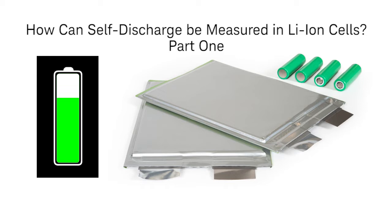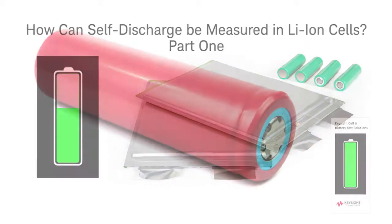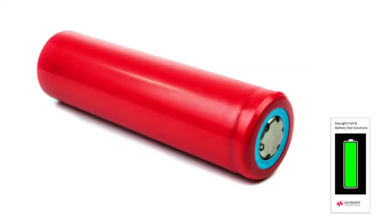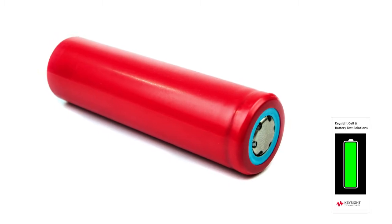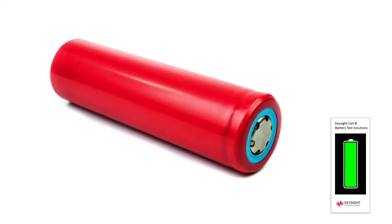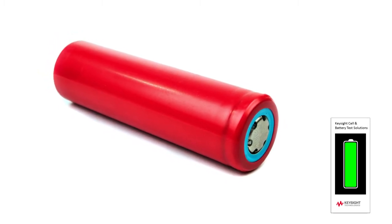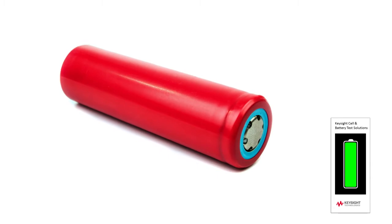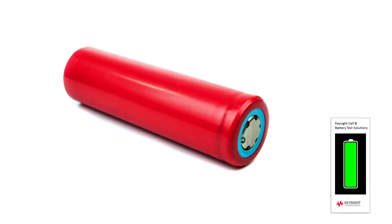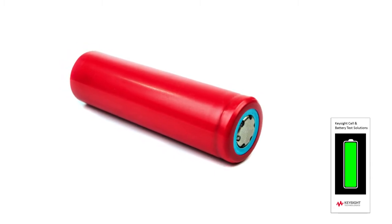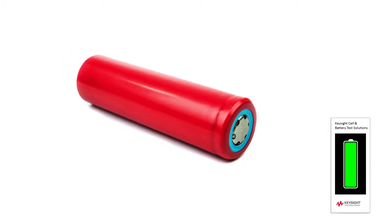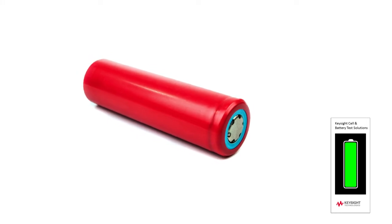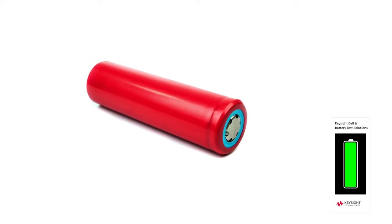We will look at another method of testing in a subsequent video. As we discussed in a prior video, self-discharge of an electrical cell is the loss of charge over time while the cell is not connected to any load. In other words, cells will gradually discharge even when they're not connected to anything.